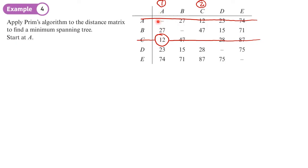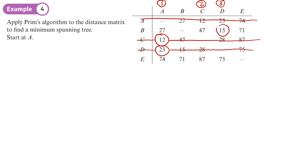Now we have two columns to look at — column one and column two — and we're looking for the lowest entry in either of these two columns. That lowest entry is 23, so we circle it. That 23 is in row D, so we label column D as three and cross out row D. Now with three columns to look at, we find the lowest entry in any of those three columns, which is 15, so we circle the 15, which is in row B, and delete row B.